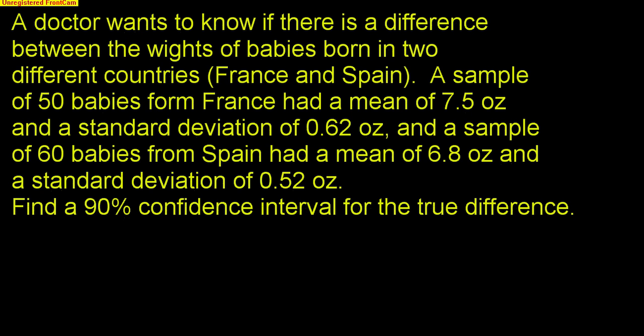Now let's look at an actual problem where our goal is to find a confidence interval. A doctor wants to know if there's a difference between the weights of babies born in two different countries, France and Spain — two completely separate populations. A sample of 50 babies from France had a mean of 7.5 ounces and a standard deviation of 0.62 ounces. A sample of 60 babies from Spain had a mean of 6.8 ounces and a standard deviation of 0.52 ounces. Find a 90% confidence interval for the true difference. I'll organize everything into two lists — Spain and France.